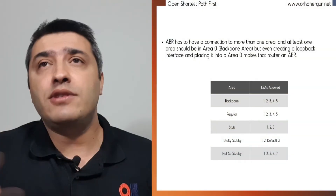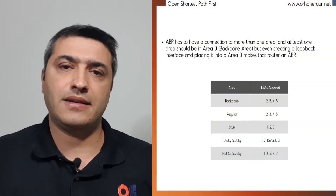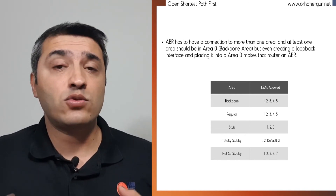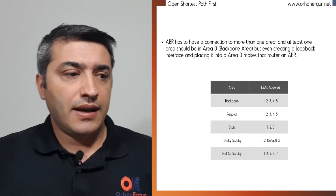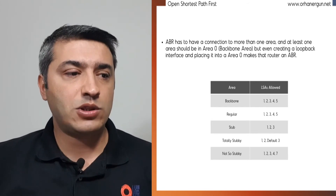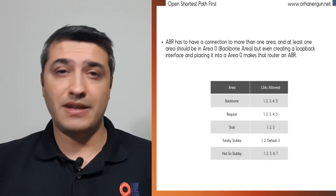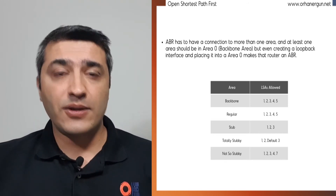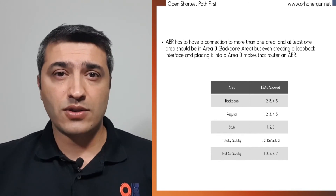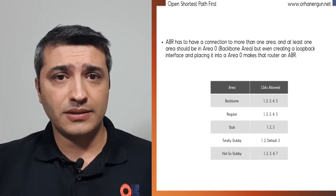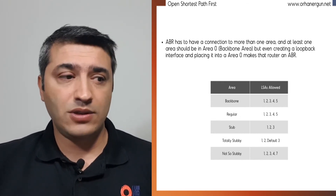An ABR must have at least two interfaces, and at least one must be in area 0. Even if you create a loopback interface and place it in area 0, that makes the router an ABR. Here I'm showing a chart summarizing which area type allows which LSA types. You need to know this by heart — in exams, interviews, and real life. OSPF is very common in enterprise and service provider networks, and I will show use cases in service provider and data center environments.